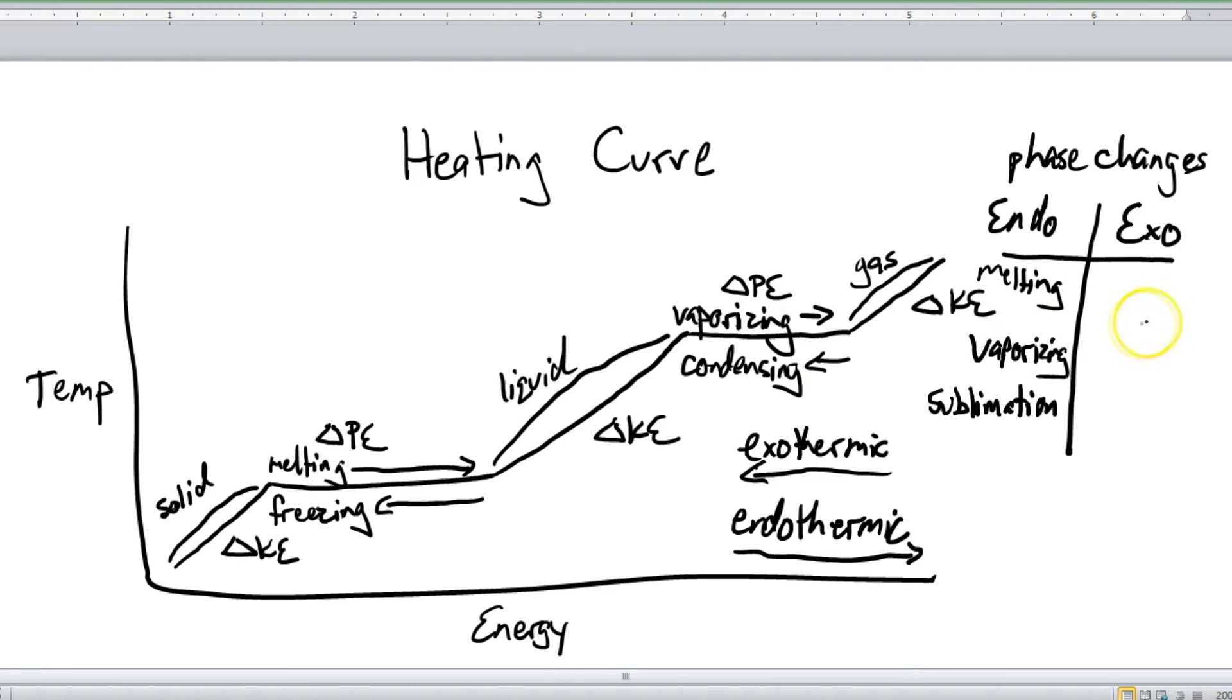The exothermic phase changes, that's going right to left. So the opposite of melting is freezing. The opposite of vaporizing is condensing. And yes, there is an opposite of sublimation going from a gas to a solid. And that is called deposition.